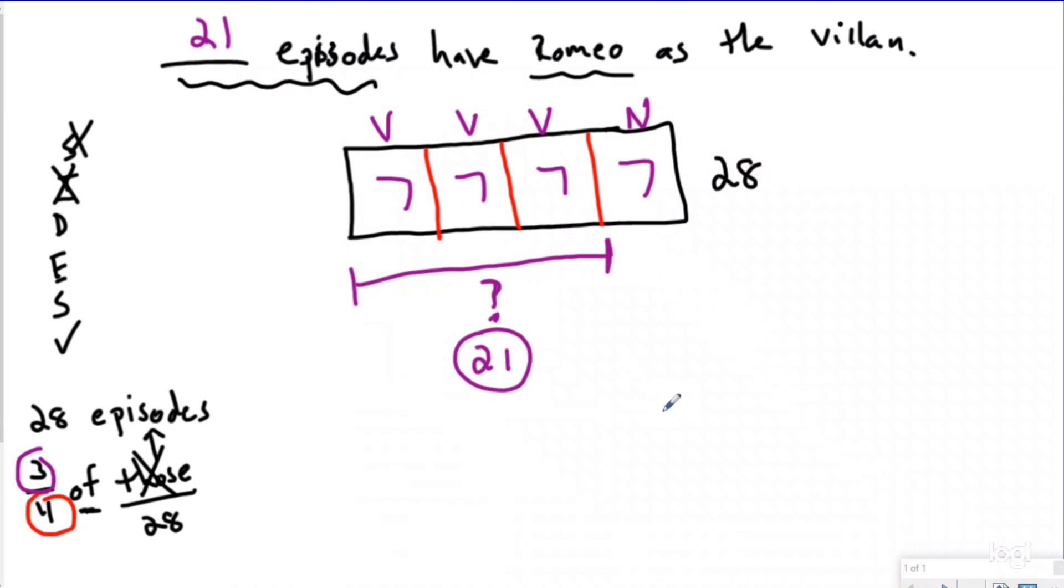Now, if you did the shortcut, what you would have done is 3 fourths of 28, and anytime you're doing a fraction of a group, so more than one, whether it's 2, 3, 4, 5, 6, 1,000, a million, a billion, you're really multiplying this fraction.